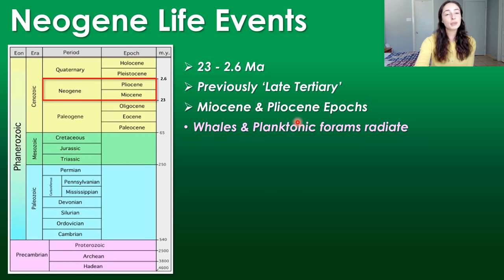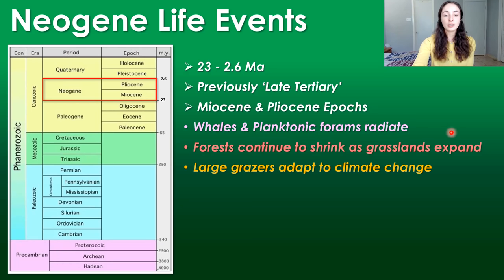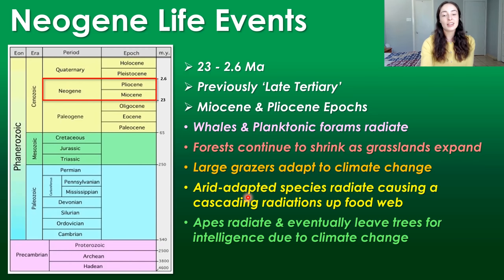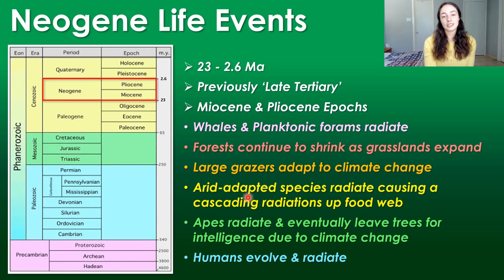In terms of life events during the Neogene: whales and planktonic forms radiate rapidly during the early Neogene. Forests continued to shrink due to cooling, and grasslands continued to expand. Large grazers adapted to climate change because they liked the grasslands. Arid-adapted species caused cascading radiations up the food web. And apes radiated and eventually left their tree-climbing habitat to evolve intelligence due to climate change, eventually leading to humans.